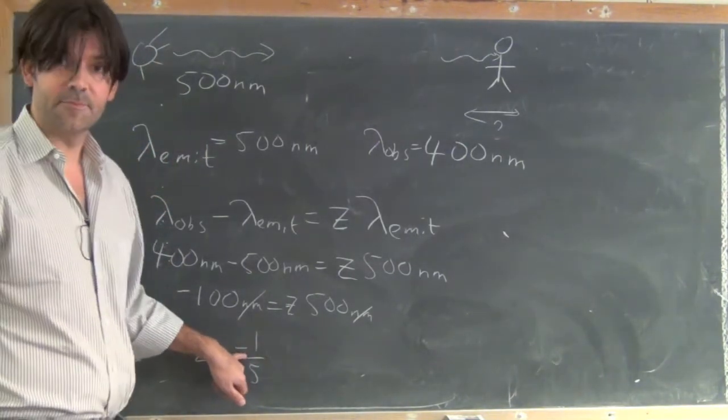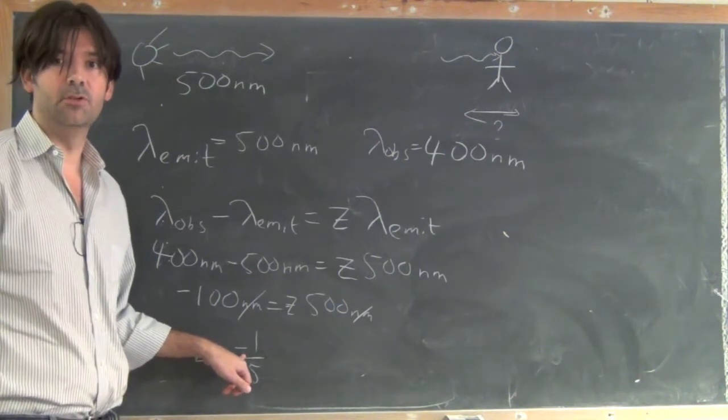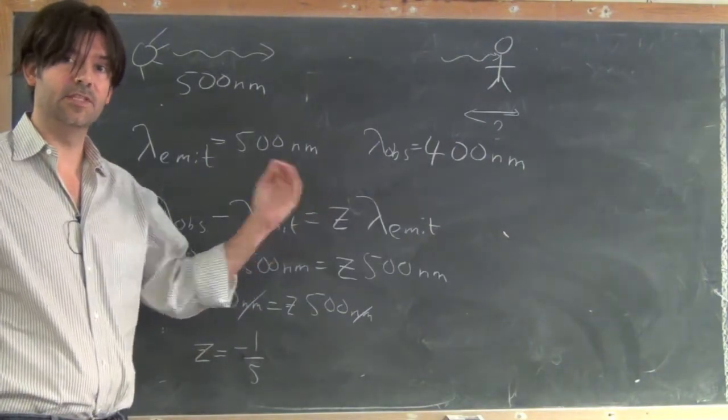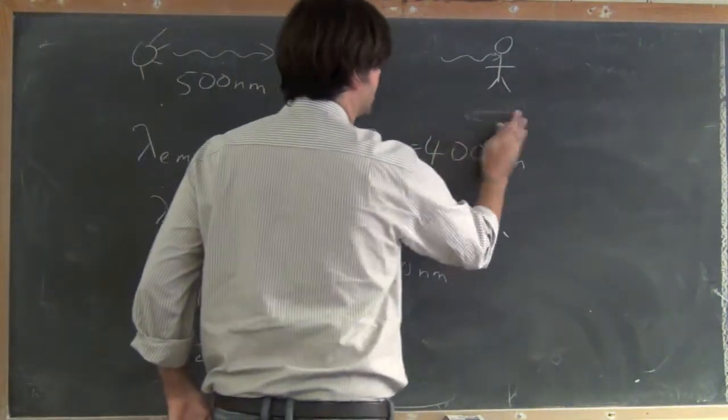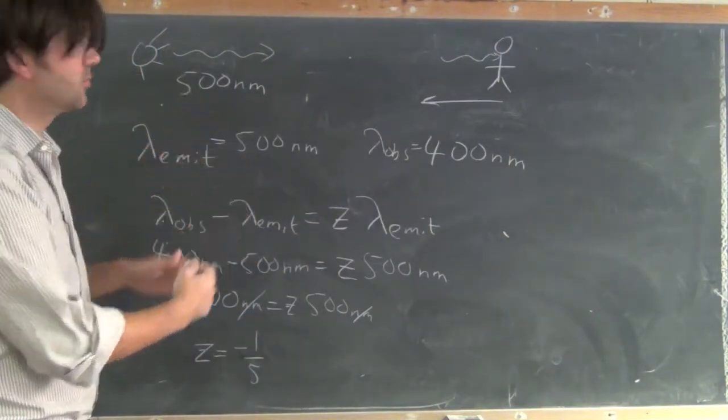Since it's negative, that tells me the direction. I know that negative z's are blue shifted, which means things are moving together. So, that answers at least the question that I'm moving towards the object, or the object is moving towards me.